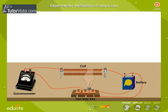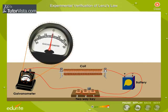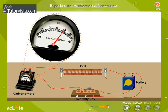Insert the key between the points 1 and 2. The current flows in the anti-clockwise direction, developing a north pole on the upper face. The needle of the galvanometer deflects to the right side, showing that the current is induced.